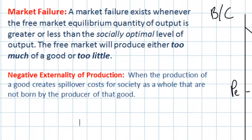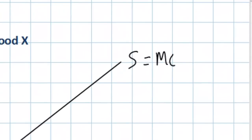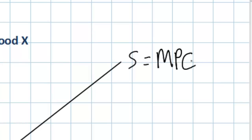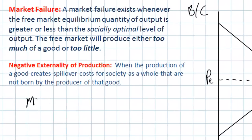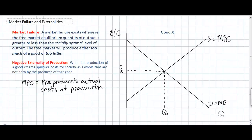A negative externality of production exists whenever the production of a particular good creates spillover costs for society as a whole that are not borne by the producer of that good. Looking at our diagram, the supply curve represents the costs of production — specifically the marginal private cost, or MPC — in other words the costs faced by the actual producers of that good, including labor costs, the costs of raw materials, the costs of energy, and other inputs that the firm must pay for in the production of a good.